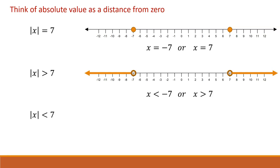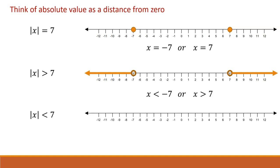For the inequality the absolute value of x is less than 7, we're being asked for all the numbers that are a distance of less than 7 units from 0 on the number line. Those numbers are between negative 7 and positive 7, so our solution is negative 7 is less than x, which is less than 7.